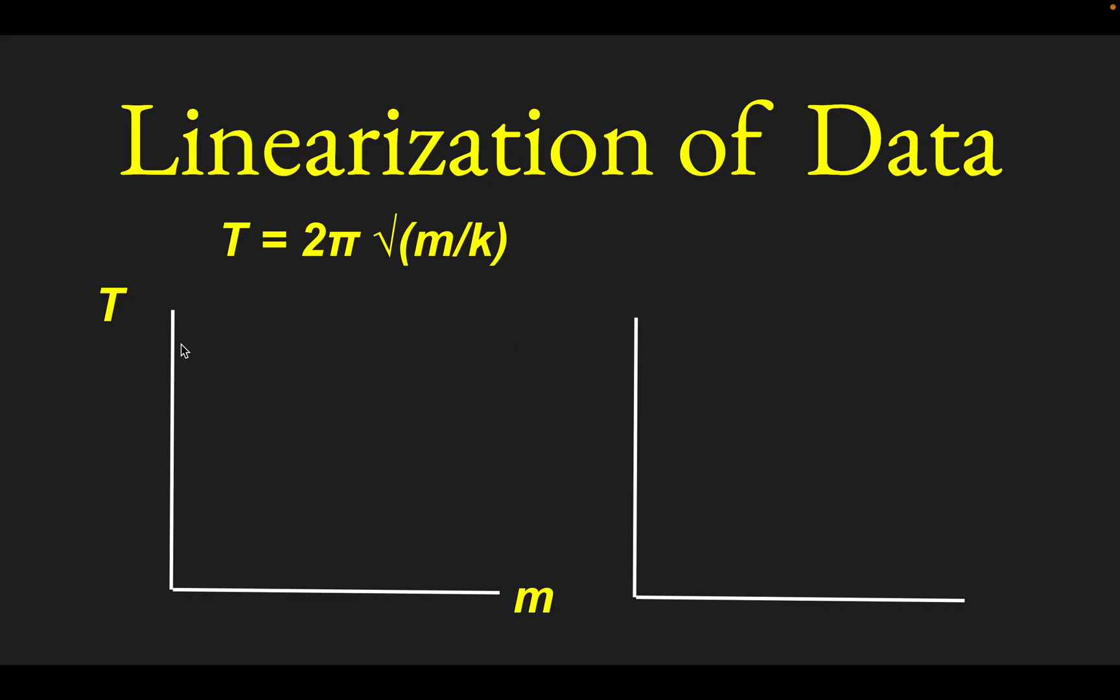So the expected relationship is 2 pi times the square root of mass over the spring constant k. Well, if you plot the period t against the mass m, you'll get a square root-type dependence. So the curve would look like this. It would be curved. It would not be linear. Because t is not proportional to m, t is proportional to the square root of m.